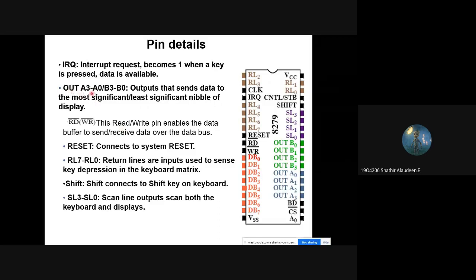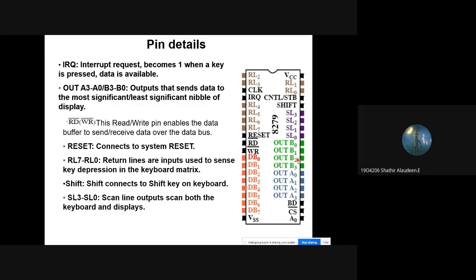The output pins A3 to A0 and B0 to B3 can be used as two 4-bit or one 8-bit port to connect a display such as a seven-segment display or LCD display. These pins can be encoded or decoded. The shift key is an additional key used to connect a keyboard. SL3 to SL0 are scan line outputs which scan the keyboard to determine whether a key is pressed or not.